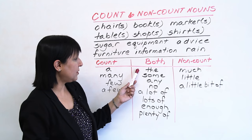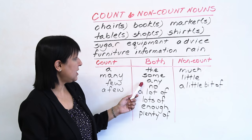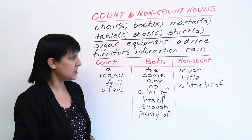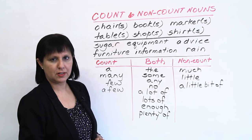We can say 'the' — 'the information,' 'the book' — it works. 'Some equipment,' 'some shirts' — it works for both. 'I don't have any sugar in the house,' or 'I don't have any tables.' 'No' — 'There is no equipment at the office,' 'There are no books on the table' — it works for both countable and non-countable. We can say 'I have a lot of markers of different colors,' or 'I have a lot of advice for you' — again, countable or uncountable.